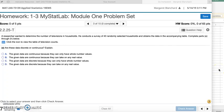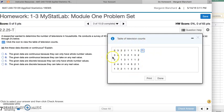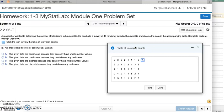Module 1, problem number 3. A researcher wanted to determine the number of televisions in households. He conducts a survey of 40 randomly selected households and obtains the data in the accompanying table. Complete parts A through H below. Before we dive into the problem, I wanted to point out this icon right here. If you click on it, that gives you the data set. There's the 40 observations from the survey. So let's go ahead and go to part A.